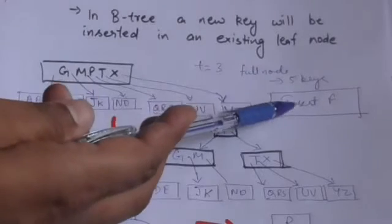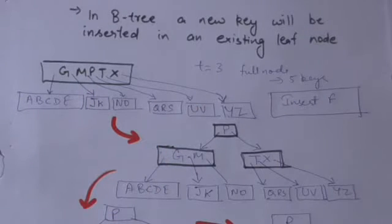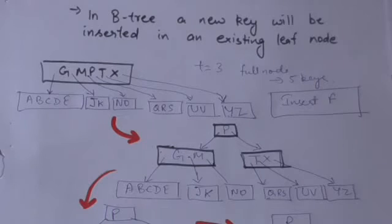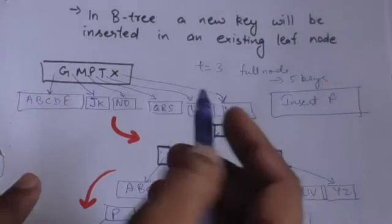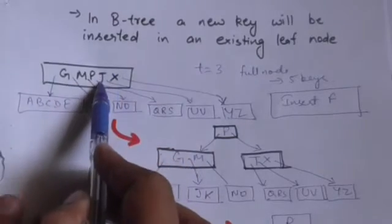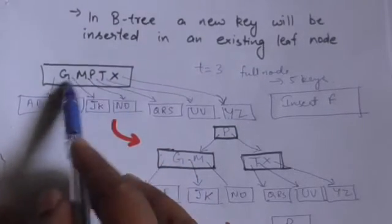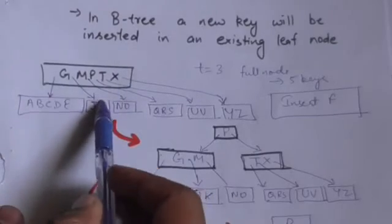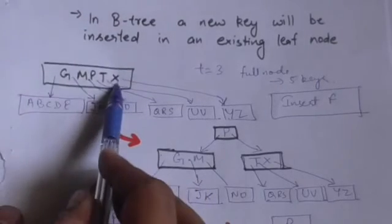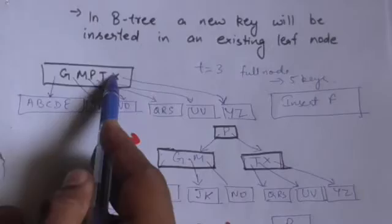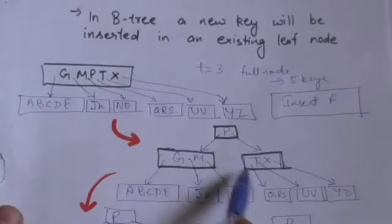Now we have to insert the key F in this B-tree. We start from the root node and move down the B-tree searching for the position for key F to be inserted. This root node has 5 keys, so this root node is full. So we will split it.